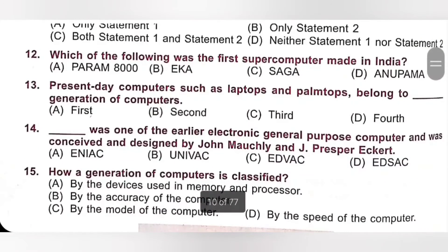Question 12: Which of the following was the first supercomputer made in India? A. Param 8000, B. EKA, C. Saga, D. Anupamma. Param 8000 was the first supercomputer made in India. Option A is the correct answer.